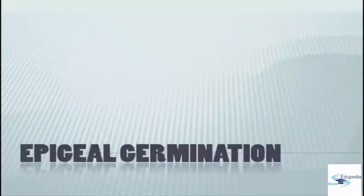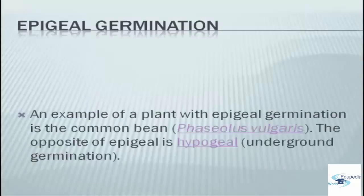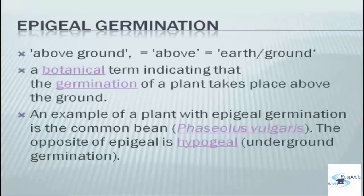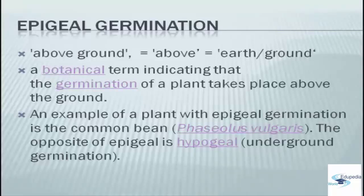Next, we have epigeal germination. The previous slides gave brief information about this germination. Epigeal germination is a botanical term indicating that the germination of a plant takes place above the ground. For example, we have the common bean, and the opposite of epigeal, as mentioned, is hypogeal germination.